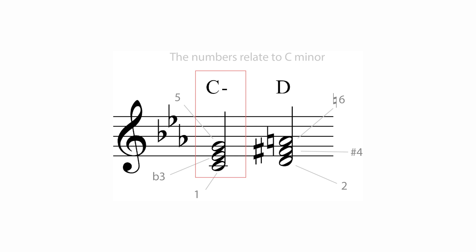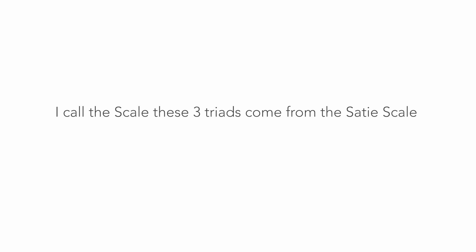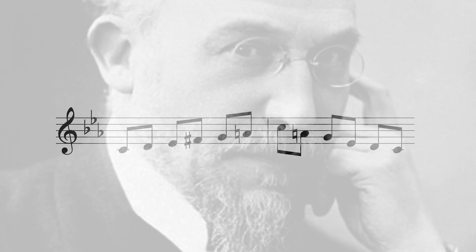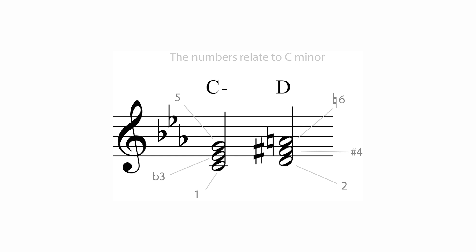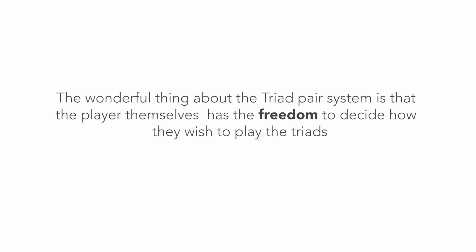Check out the link in the video description if you'd like to learn more. Another pair of triads are C minor and D major. I call the scale these two triads come from the Satie scale. I heard this sound in Satie's Gnossienne number three.